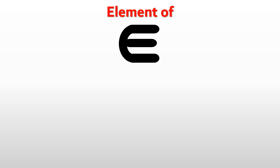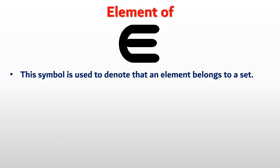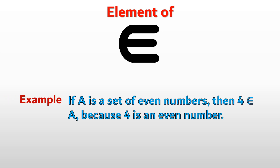Next, Element Of. This symbol is used to denote that an element belongs to a set. Example: if A is a set of even numbers, then 4 is an element of A because 4 is an even number.